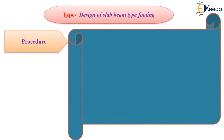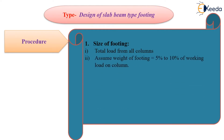Our first step will be to find out the size of the footing. For that, we have to compute the total load coming on all columns. After adding the load from the different columns, we will assume the weight of footing, that is 5% to 10% of the working load on the columns. After that, we will add the weight of footing and total load coming from the column, and we will multiply it by the factor of safety, that is 1.5, so that we will get the total factored load value.